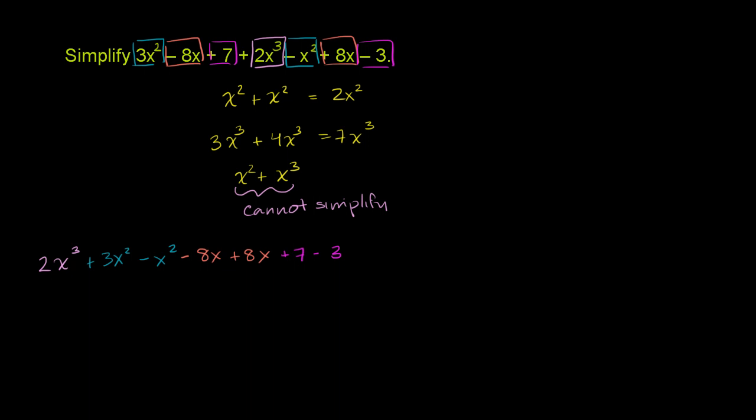But now we can simplify. We have 2x to the third. Nothing to simplify that with. But then if we have 3x squared, and from that we're taking away an x squared, we're only going to have 2x squared left. So that's going to be plus 2x squared.